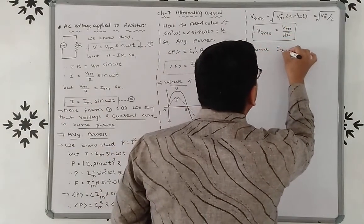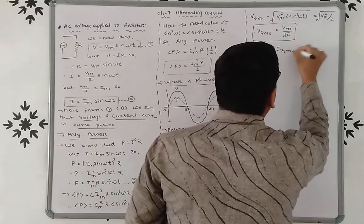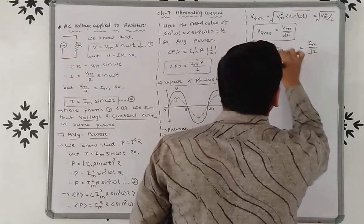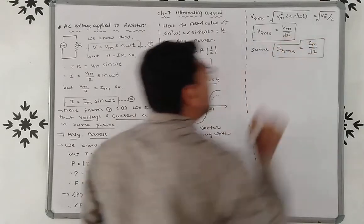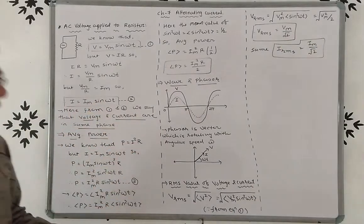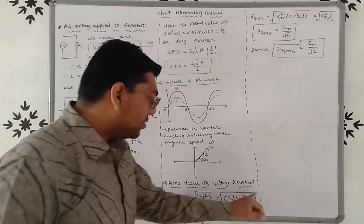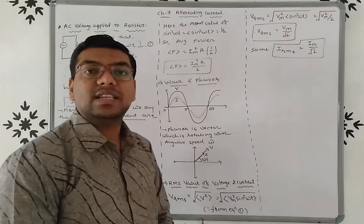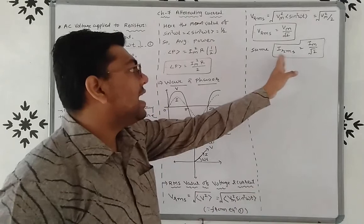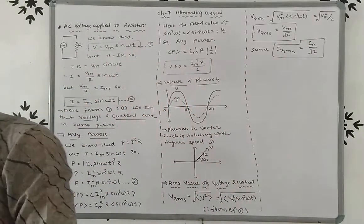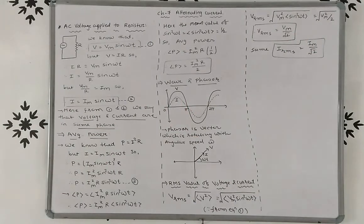The RMS value of current: Irms = Im / √2. Because I = Im sin ωt, so Irms = √(mean of Im² sin² ωt) = √(Im² · 1/2) = Im / √2. So the equations are: Vrms = Vm / √2 and Irms = Im / √2.